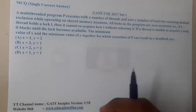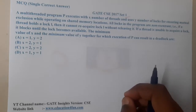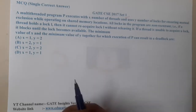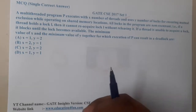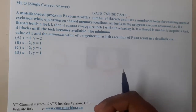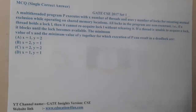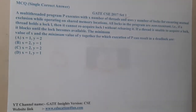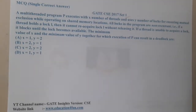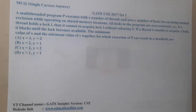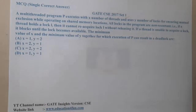All locks in the process are non-reentrant — if a thread holds a particular lock, it cannot re-acquire that lock without releasing it first. If a thread is unable to acquire a lock, it blocks until the lock becomes available. The question asks for the minimum values of x and y together for which execution of P can result in deadlock.